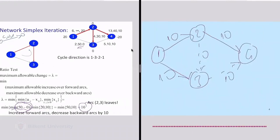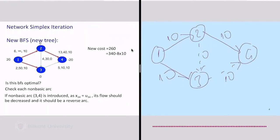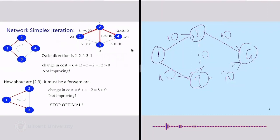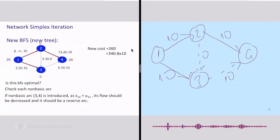Now I'll check if this new solution is optimal. There are two non-basic arcs: arc (2,3) and arc (3,4). For arc (3,4): it is currently at its upper bound of 10. That means I cannot increase it further — I have to decrease its flow. So the cycle direction is the reverse direction of arc (3,4).